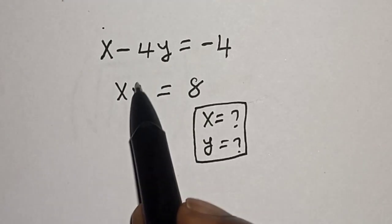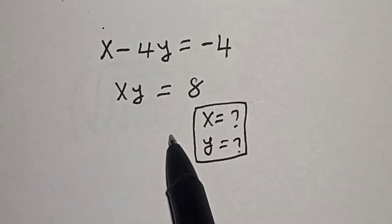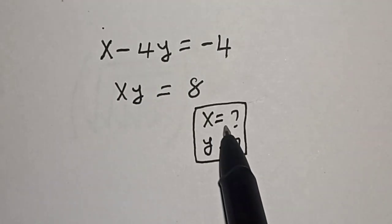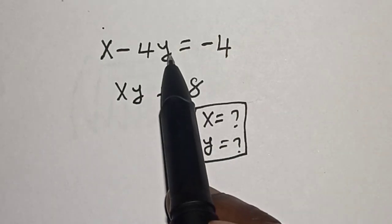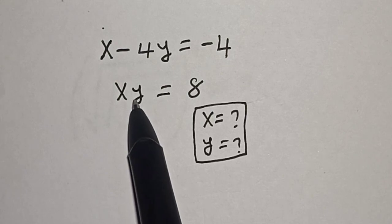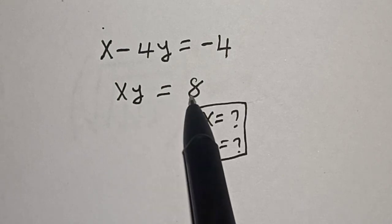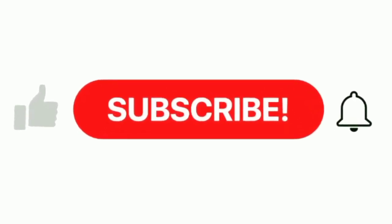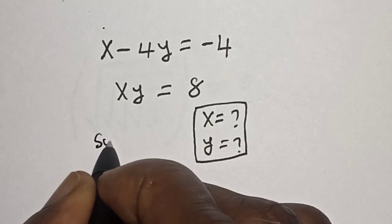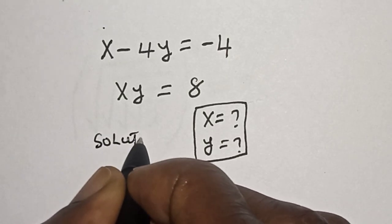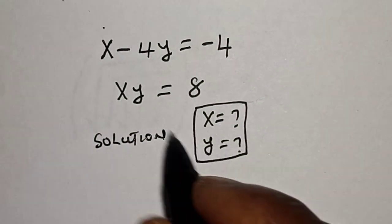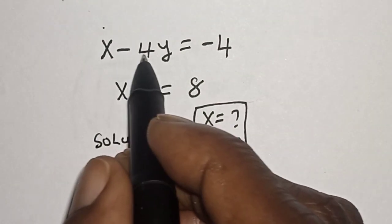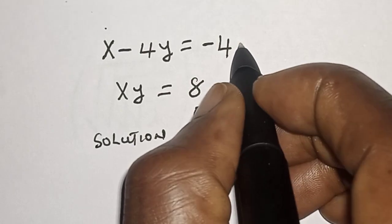Hello, welcome to Magist. In this class we want to find the value of x as well as the value of y from this given equation: x minus 4y is equal to minus 4, and xy is equal to 8. Like, share, comment and subscribe.